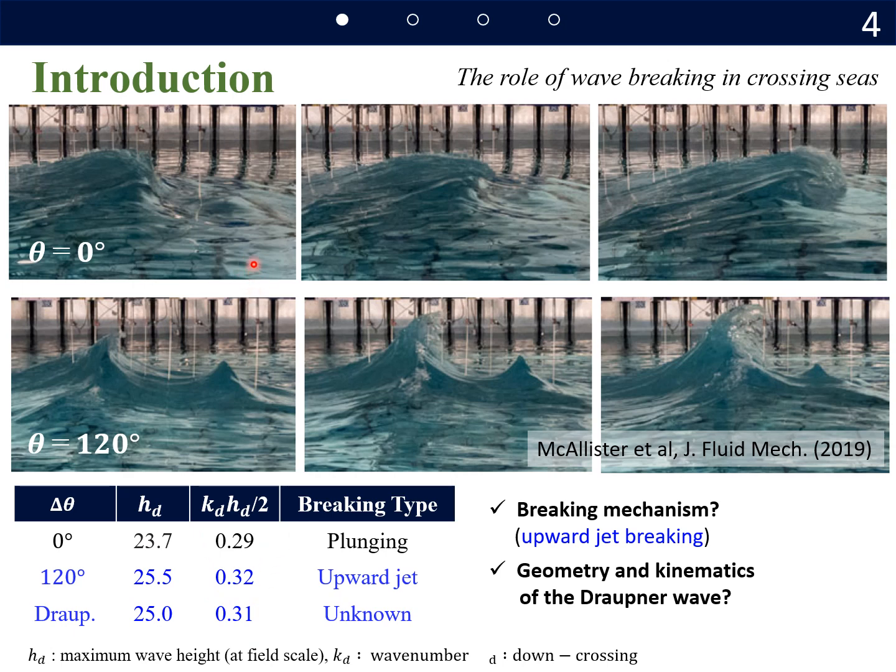This is because plunging type wave breaking with crest-overturning occurred in the following sea states. But in the crossing sea states, the upward jet breaking was observed in MC19. And unlike the plunging-type wave breaking, this upward jet breaking does not limit wave height and wave steepness.